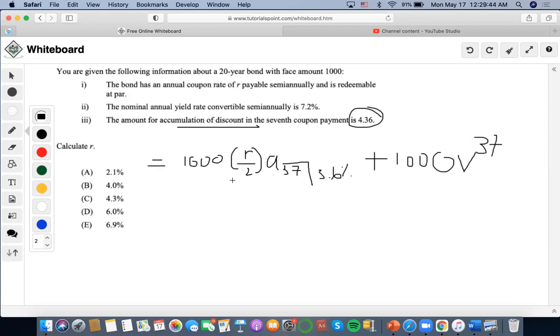I could simplify to 500R. I could solve this part. I'm going to do 1 as the payment, 37 as the number of periods, 3.6 as the interest rate, 0 as the future value, compute present value. It's going to be 20.27, right? So I'll do 500 times 20.27.